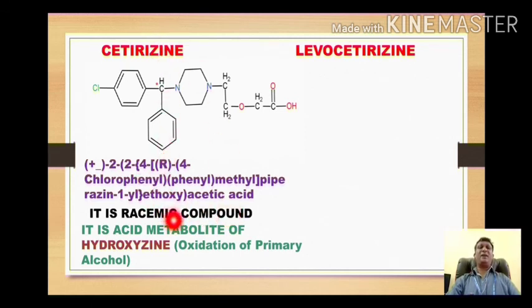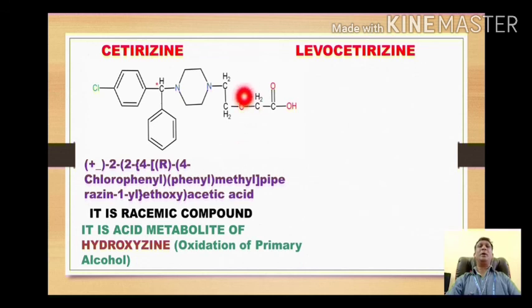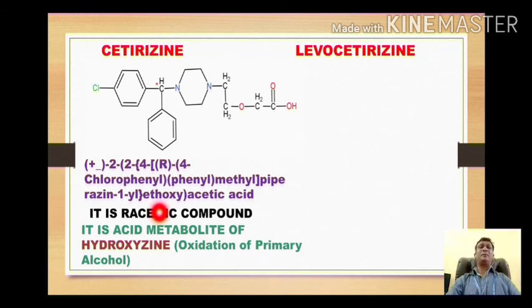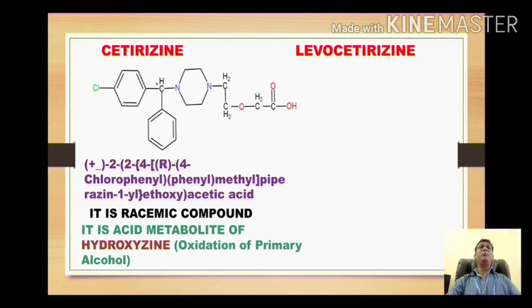One very important point is that cetirizine is the acid metabolite of hydroxyzine. In hydroxyzine, there is a CH₂OH group. This kind of question may be asked in the GPAT examination — that cetirizine is the acid metabolite of which drug — so the answer is hydroxyzine, whose primary metabolite is cetirizine.